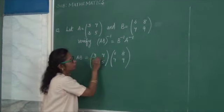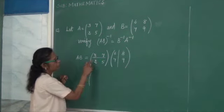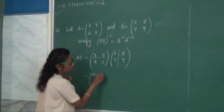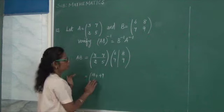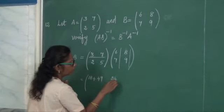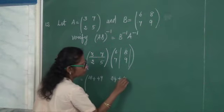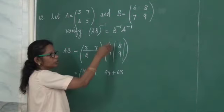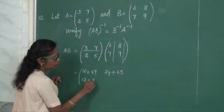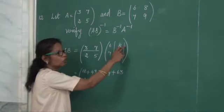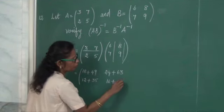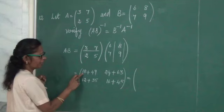Multiplying: first row, first column: 3 times 6 is 18 plus 7 times 7 is 49. First row, second column: 3 times 8 is 24 plus 7 times 9 is 63. Second row, first column: 2 times 6 is 12 plus 5 times 7 is 35. Second row, second column: 2 times 8 is 16 plus 5 times 9 is 45.